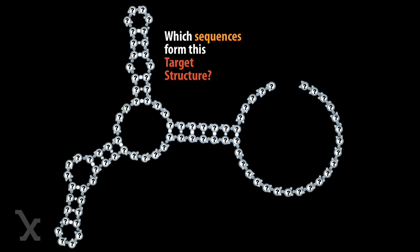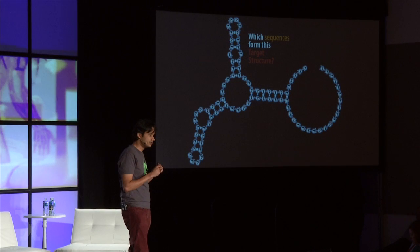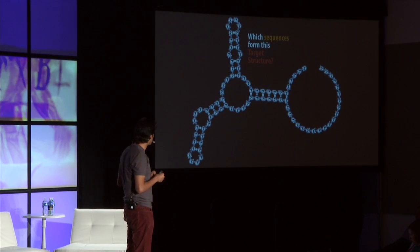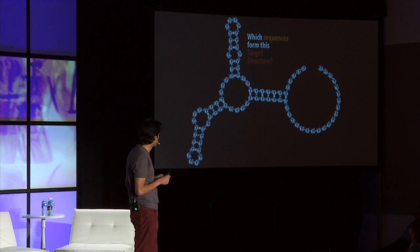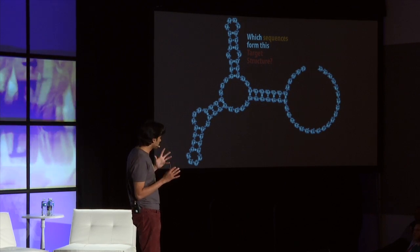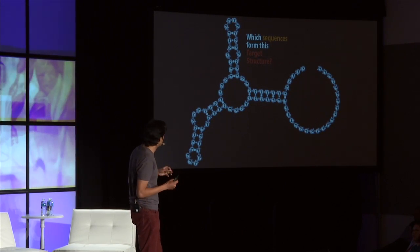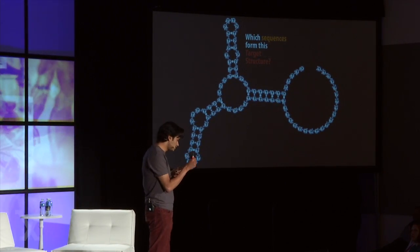Your job in solving this puzzle is to fill in the blanks with A's, C's, G's, and U's, such that A's pair up with U's and C's pair up with G's. But the thing that makes it hard is you have to make sure that sequence folds up stably into this shape and no other shape.